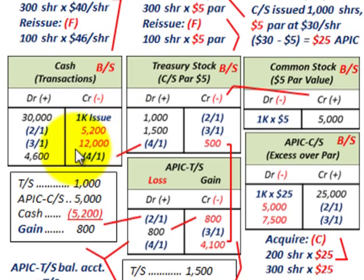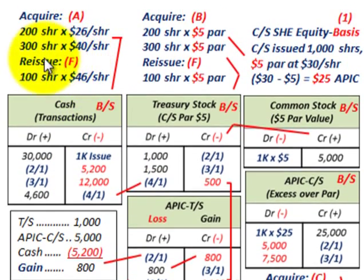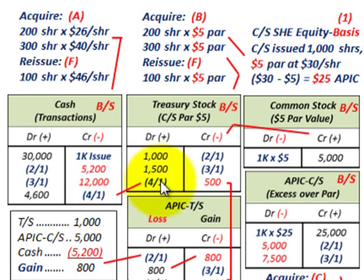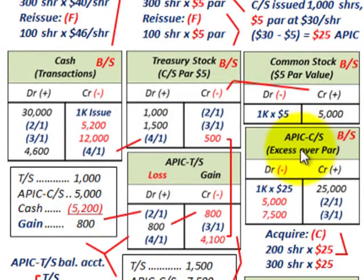Let's look at the next transaction where we acquired 300 shares at $40 per share. At date 3-1, we would credit or reduce our cash account for $12,000. Again, we use that par value — we take the $5 par amount for those 300 shares acquired. So we debit our treasury stock for $1,500.